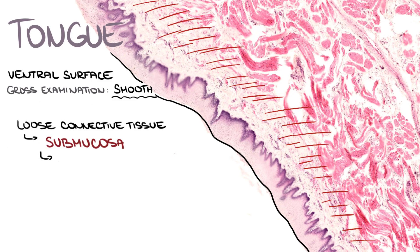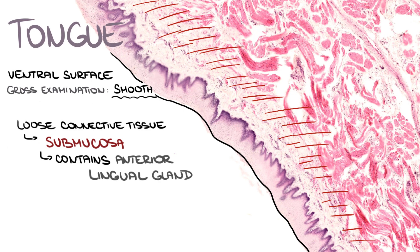called submucosa. The submucosa contains the anterior lingual gland, but unfortunately it is not visible in this slide, because the section was not cut in the apex region of the tongue.